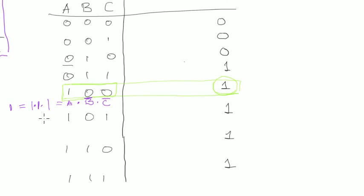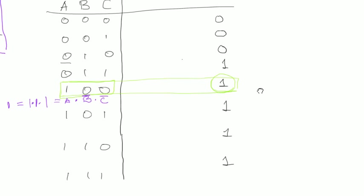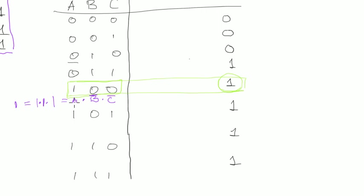We solved our problem for one line of the truth table. This expression for these input values gives a result of 1 — we're already 10% done. The rule is simple: when you have a 1 for a certain variable, you write the variable name as-is; when you have a 0, you write the negated variable. That's how you get all values equal to one. We didn't negate a because it's already 1; we negated b and c because they were 0.